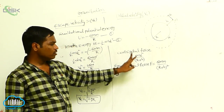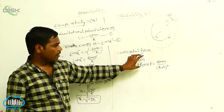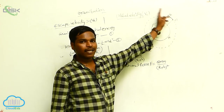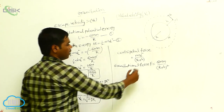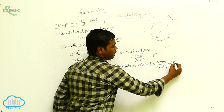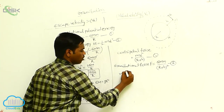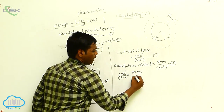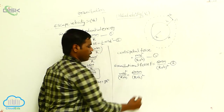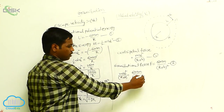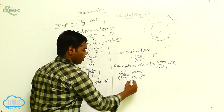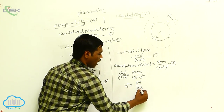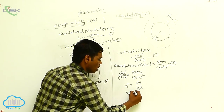The centripetal force and the gravitational force are equal and acting in the opposite direction, so the object revolves around the planet. Setting them equal: mV₀² by (R + h) equals GMm by (R + h) squared. One factor of (R + h) and m cancel from both sides, giving V₀ squared equals GM by (R + h).